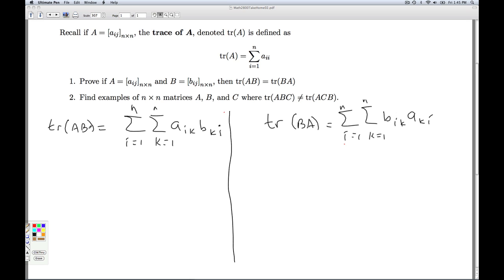So I've just recorded here what we have for the trace of AB, what we have for the trace of BA. My job is now to convince you that these double sums are actually the same. So the first thing, let's get the A and the B in the right order. So let's work with this one a little bit. That's going to be the sum I equal 1 to N, the sum K equal 1 to N, and the commutative property of multiplication there gives me that.